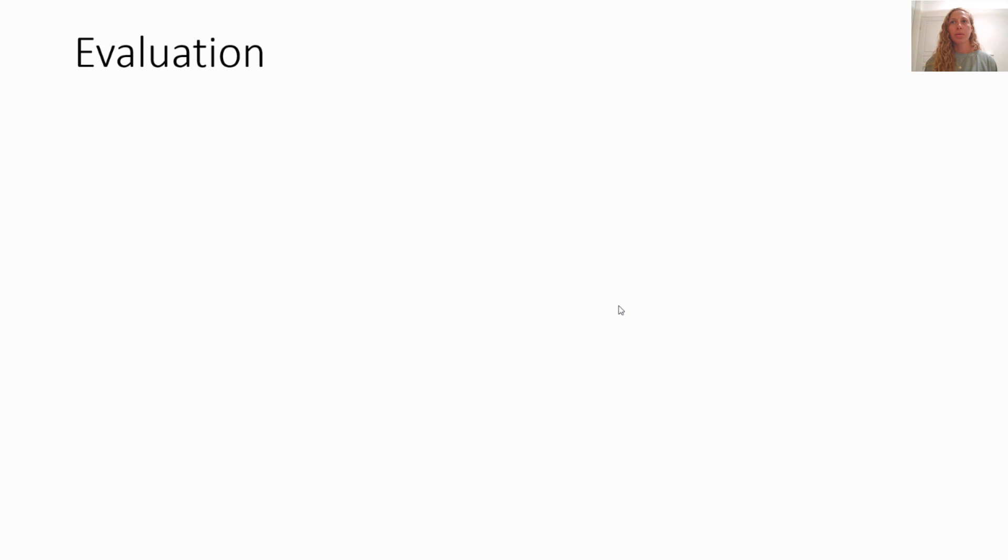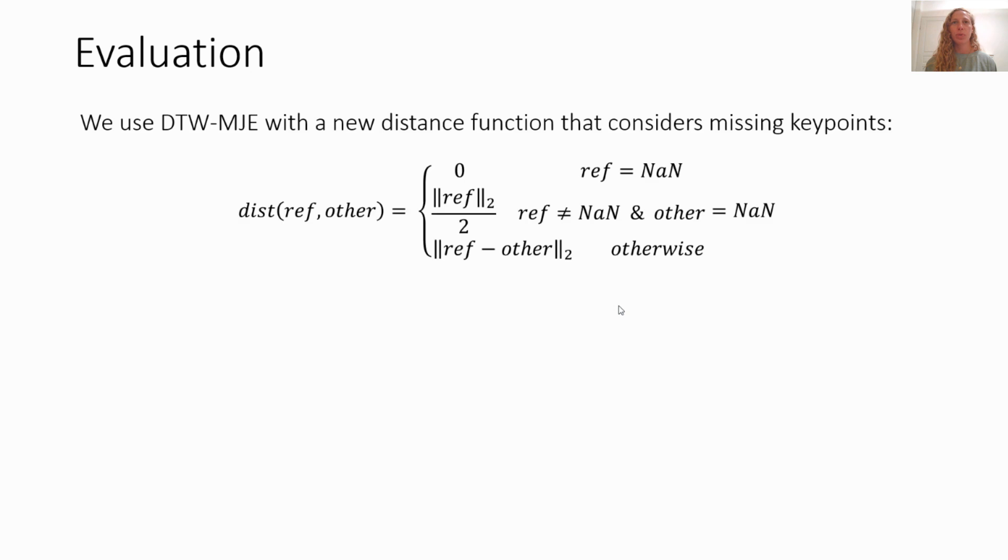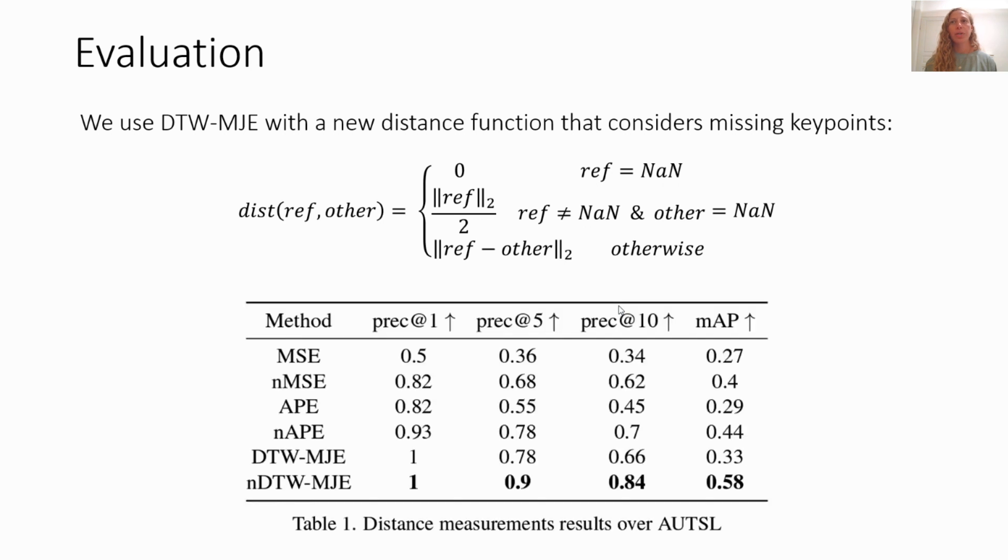To evaluate our model, we suggest a new distance function that measures the distance between pose sequences while considering missing keypoints. We use DTW-MJE with our suggested distance function and call it NDTW-MJE. To validate NDTW-MJE, we compare it with existing distance measurements and show that it measures the distance between pose sequences in the most accurate way. Please refer to the paper for more details.